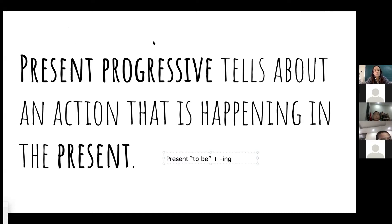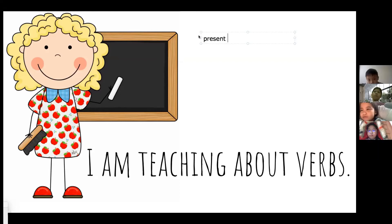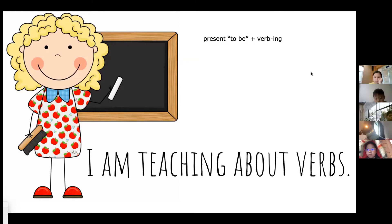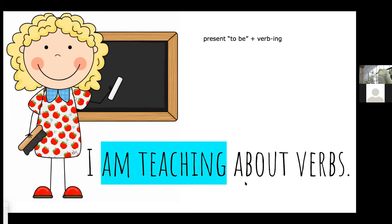To form the present progressive tense, we need the present tense of the verb 'to be' plus the '-ing' ending. Let's look at an example: 'I am teaching about verbs.' Who can tell me what the progressive verb tense is in this sentence? We need the present tense of 'to be' — which is 'am' — plus a verb ending in '-ing' — 'teaching.' So our present progressive verb is 'am teaching.'